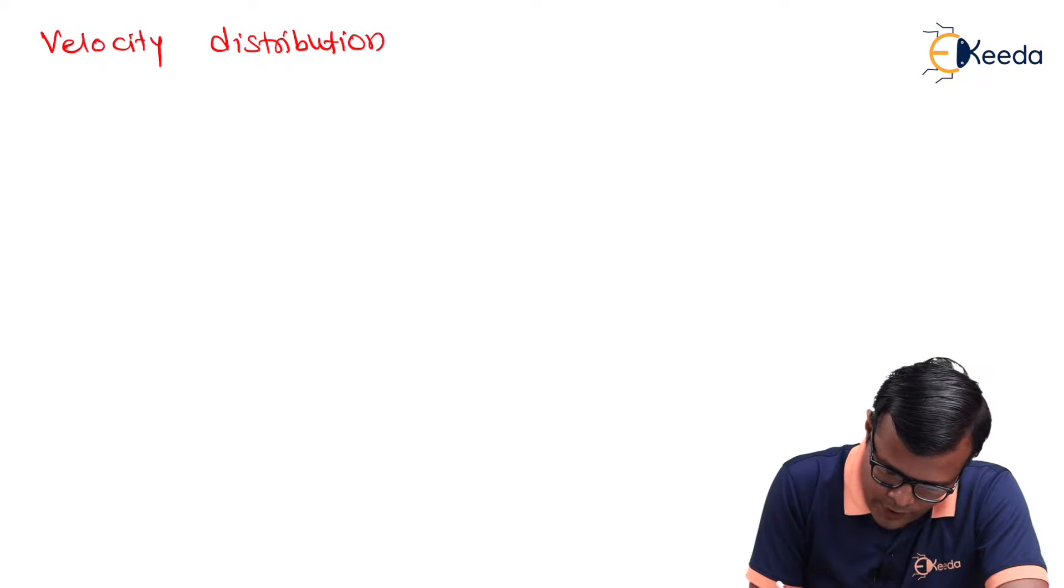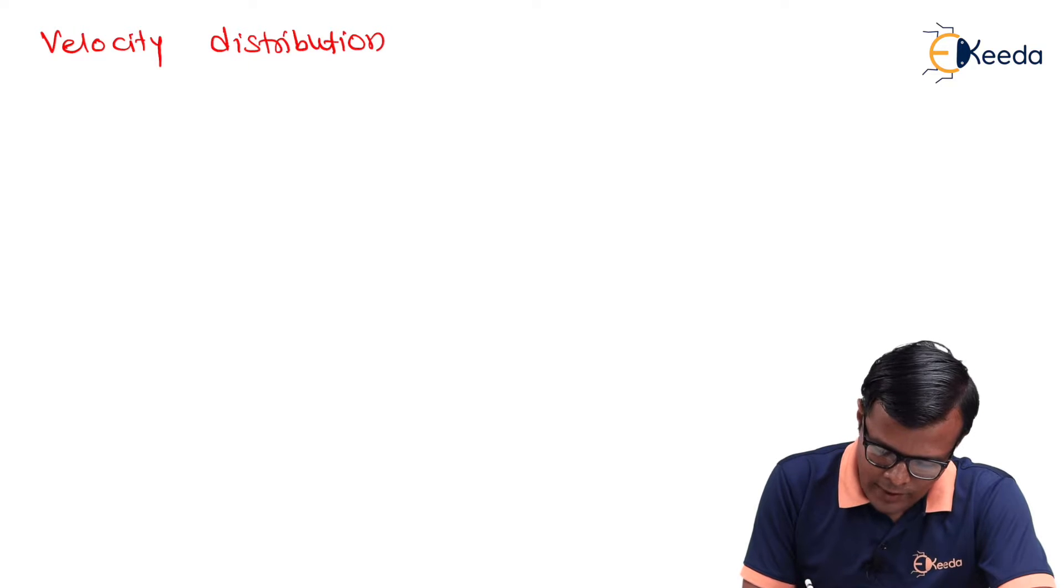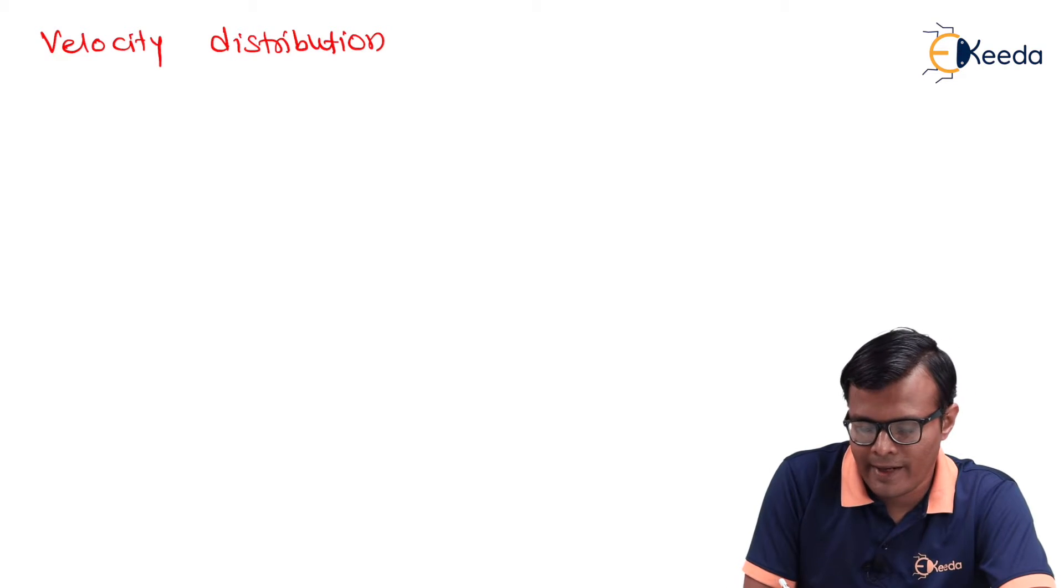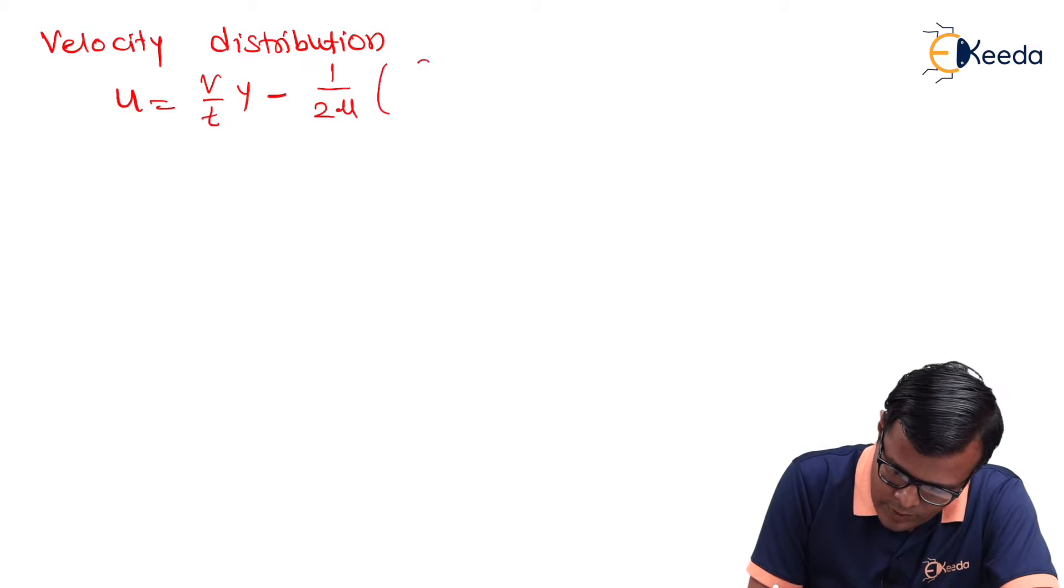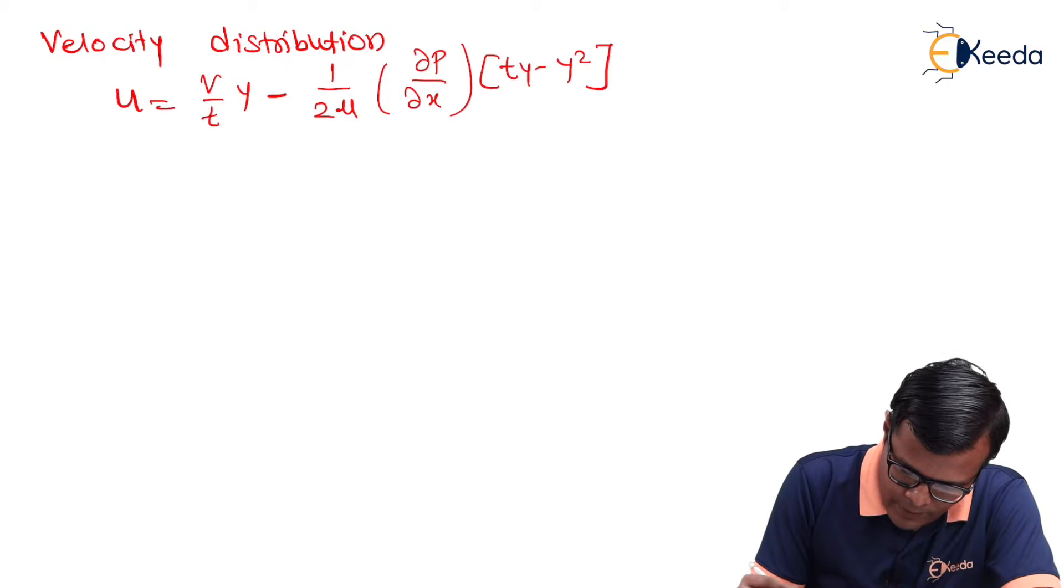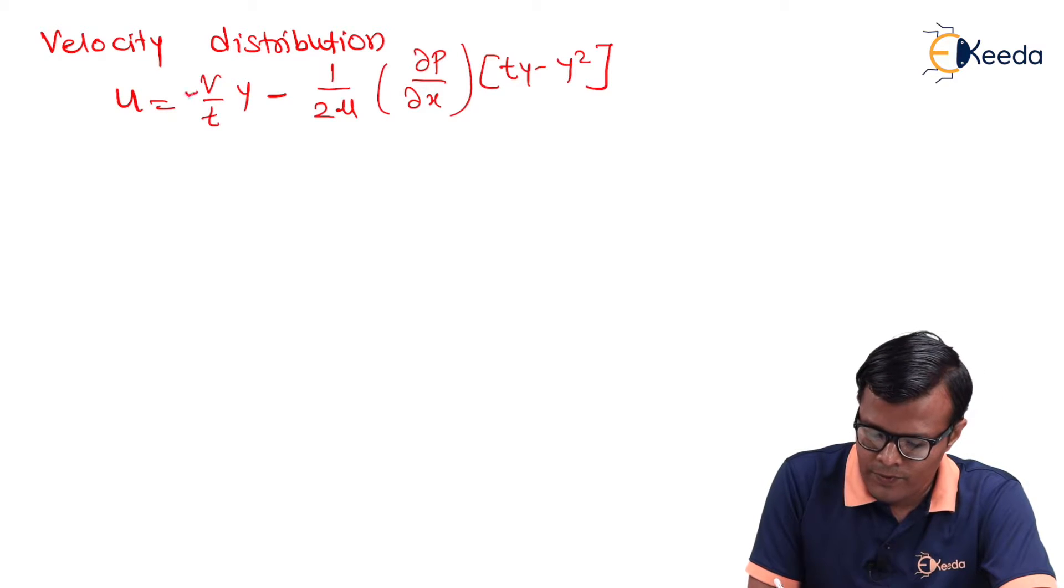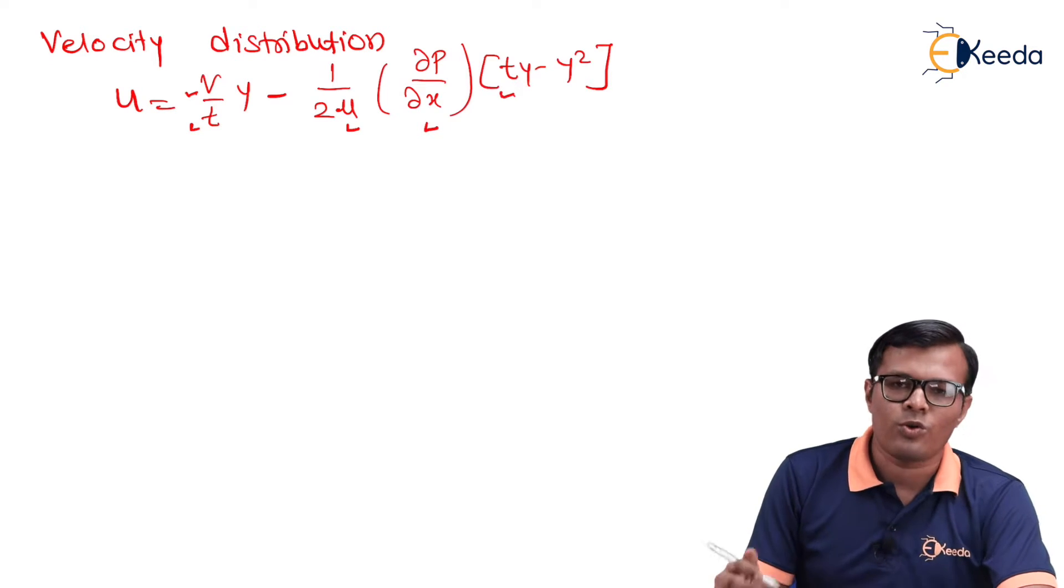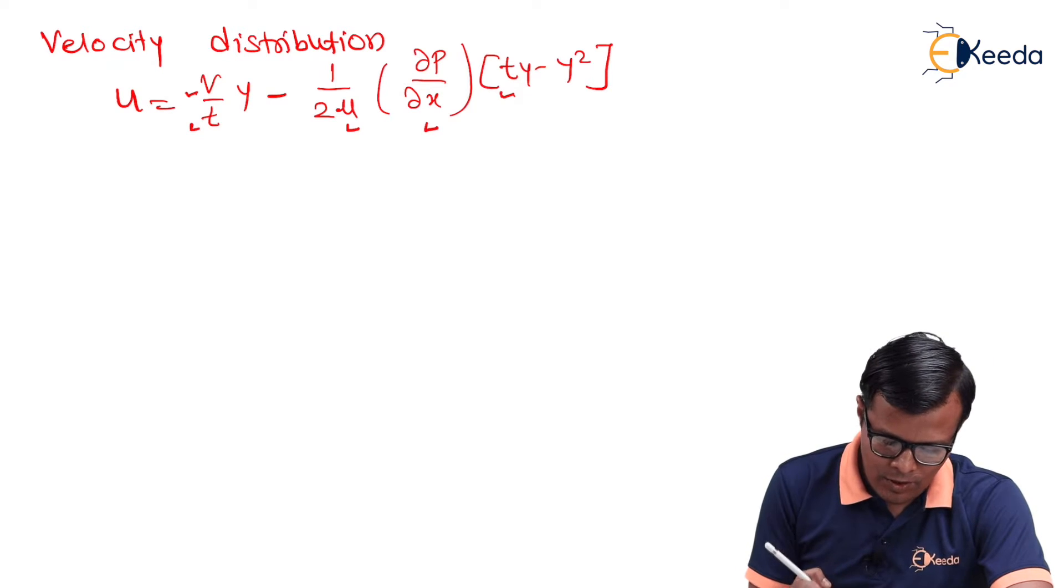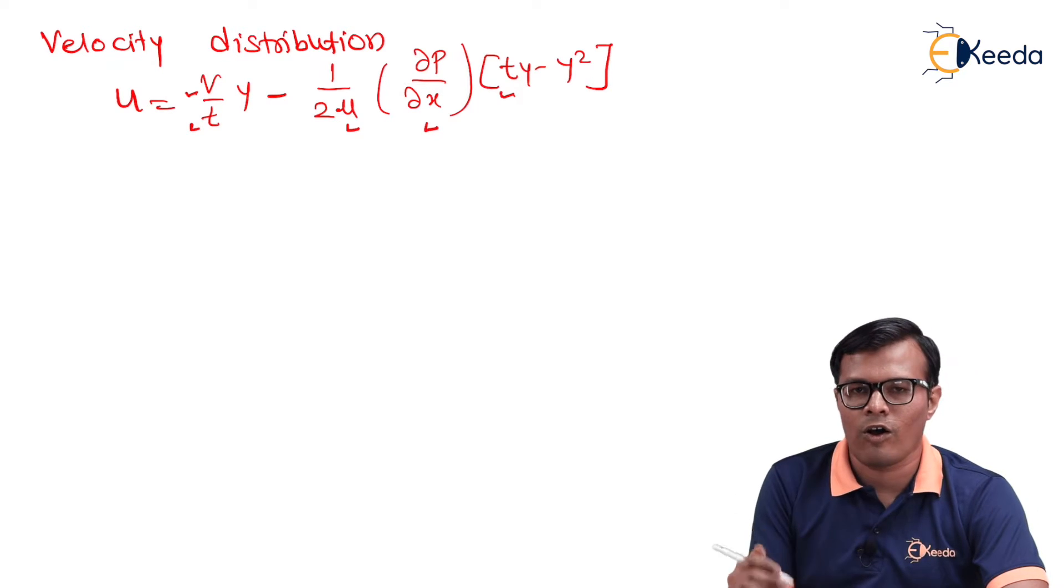First, we will find velocity distribution. To find velocity distribution we are interested in calculation of u. We know the formula for u is V/t·y - 1/(2μ)·(dP/dx)·(ty - y²). We know the value of V, value of t, value of μ, value of dP/dx, and again value of t. So, by putting all these values we will have a relation of u in terms of y or y².